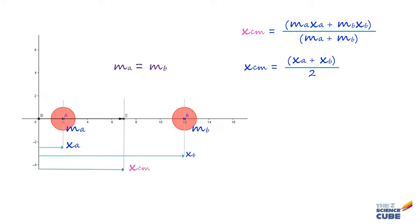And finally, this equation also tells us that if both ma and mb are greater than zero, center of mass will necessarily lie between xa and xb or between the two particles.